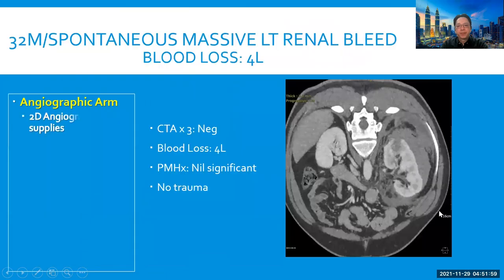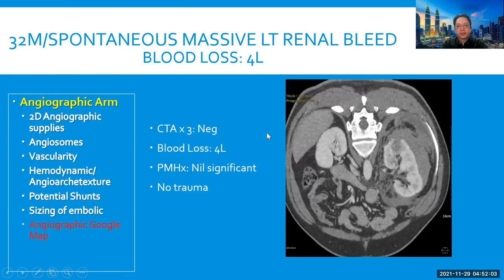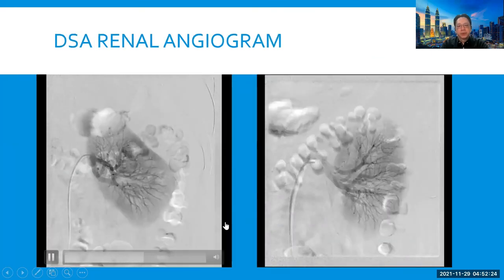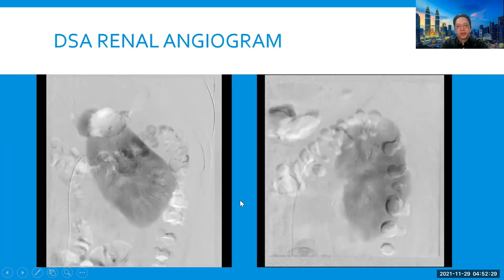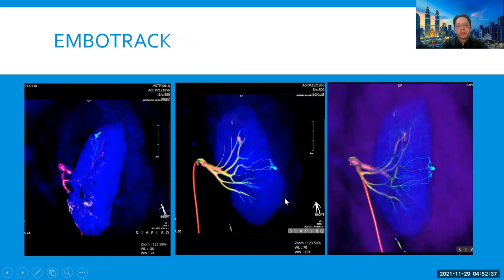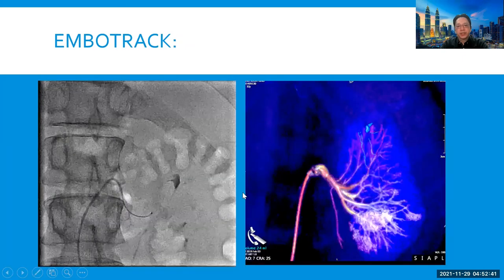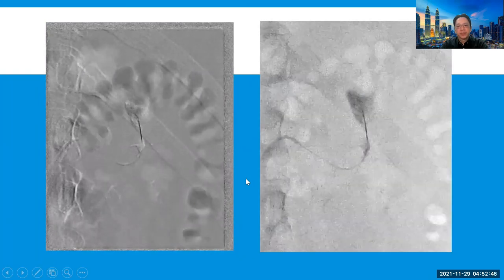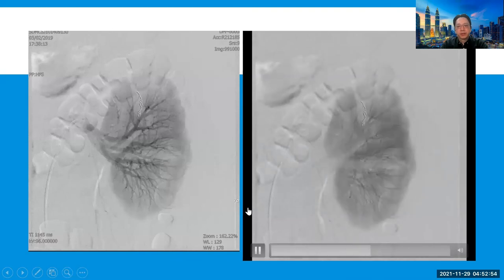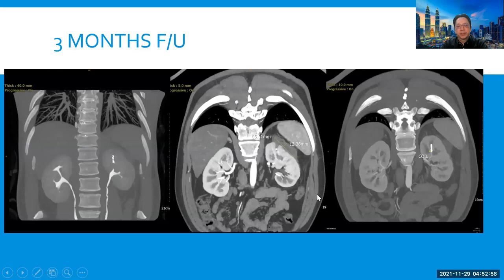In another patient where the aneurysm was not seen on DSA, spontaneous left renal bleed had occurred with significant blood loss. Using angiographic road-map assistance, we were able to identify the source of bleeding despite a negative DSA angiogram. CT angiography picked up three pseudoaneurysms, and these were all selectively guided using EmbolTrack technique — each and every pseudoaneurysm was precisely embolized. On-table follow-up CT scan and DSA Angio CT, along with follow-up CT scan three months later, showed remission of all pseudoaneurysms.